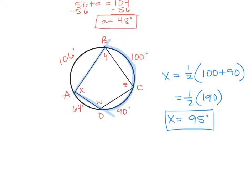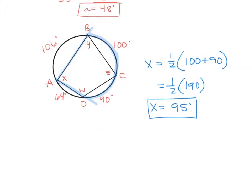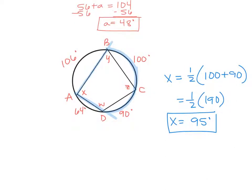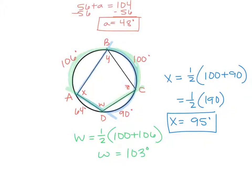Now let's go to w. The intercepted arc for w is 100 plus 106 together. So w is half of 100 plus 106 — half of 206 — which means w is 103 degrees.